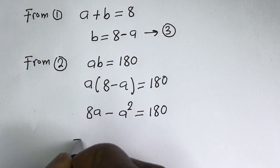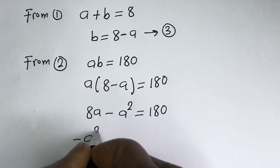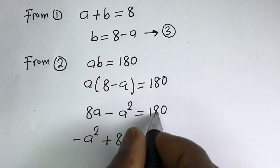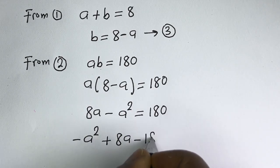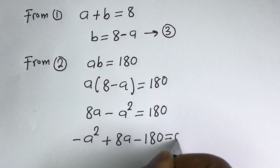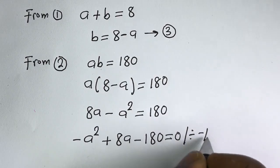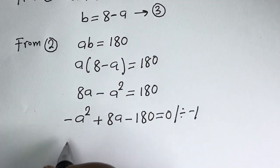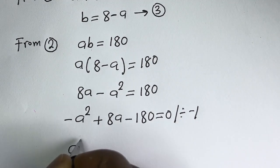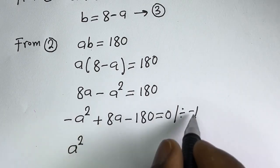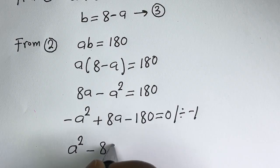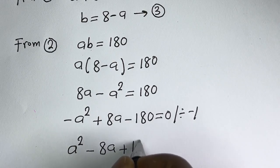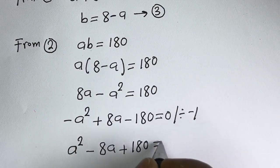Now this is minus A squared plus 8A. Taking everything to one side, we get minus A squared plus 8A minus 180 is equal to 0. Let's divide all through by minus 1: A squared minus 8A plus 180 is equal to 0.